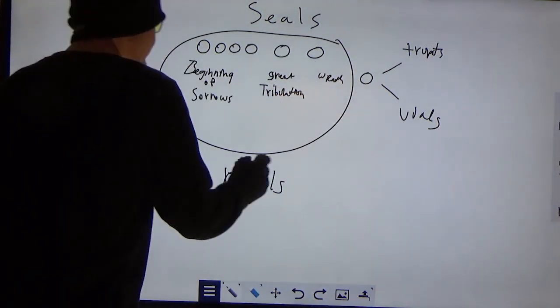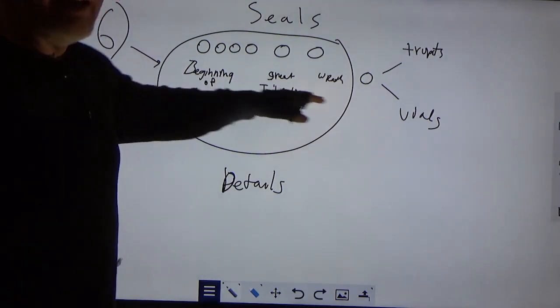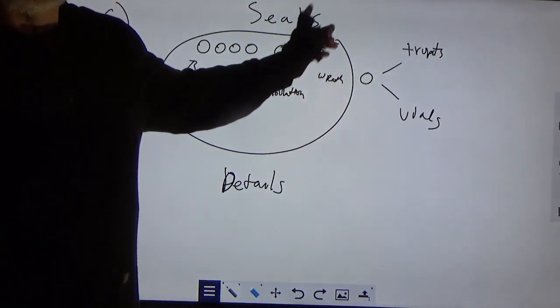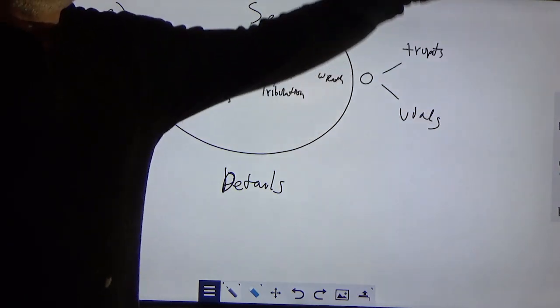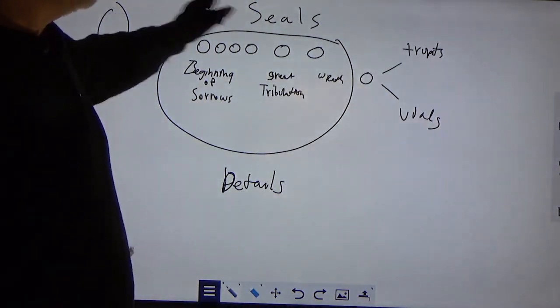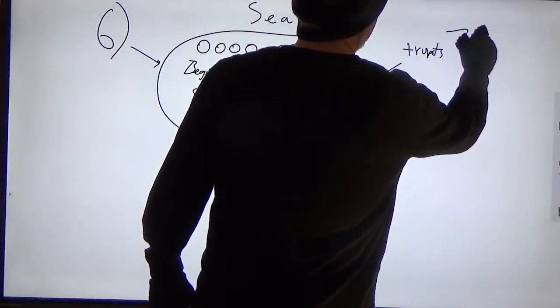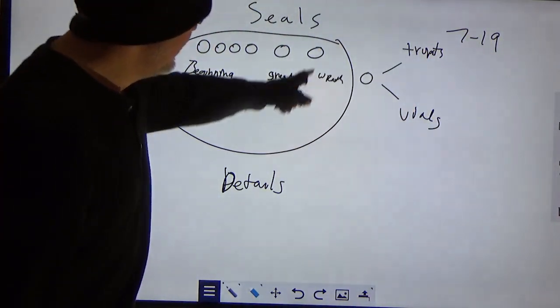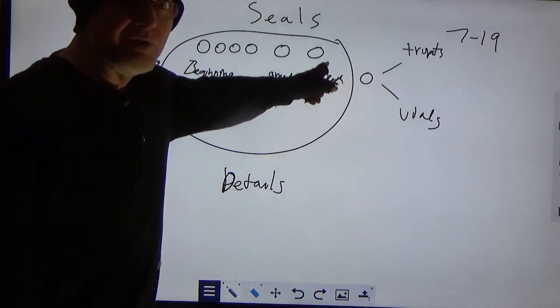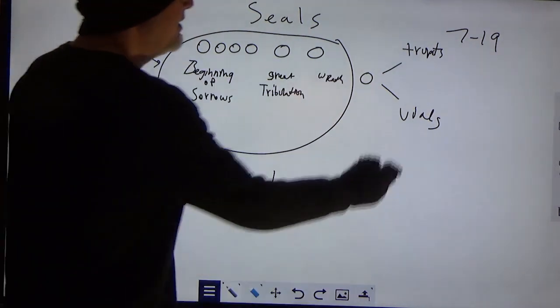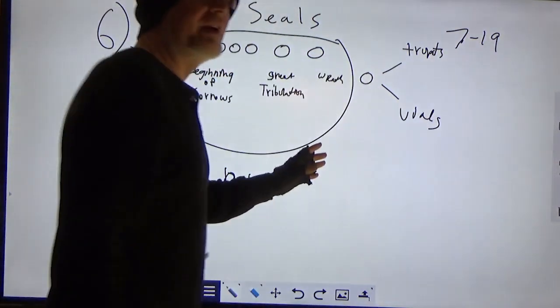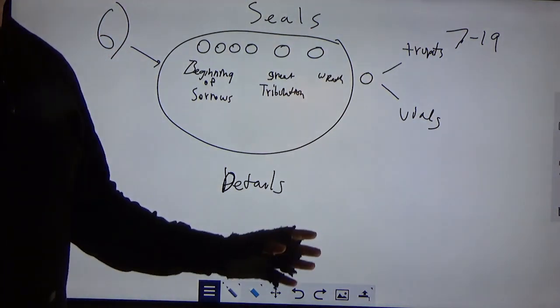So starting in chapter 6, you have the overlay from the beginning of sorrows, the great tribulation, to the wrath of God, Jesus coming back to set up his kingdom, all wrapped up in one chapter. And then from chapter 7 to 19, we see in 19 he's coming back on a white horse to defeat the armies of the earth, and 7 starts to begin with the people that are going to actually be saved during this time. He tells us who's going to make it through all that.